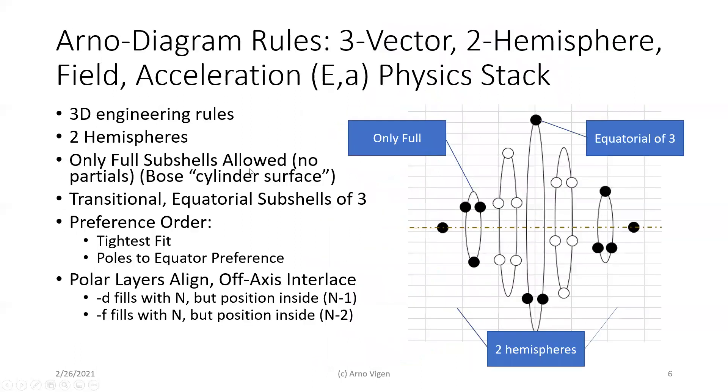Now, now let's build the Arno diagram of how that looks. And there are specific rules then that apply in this three vector electrostatic strong weak two hemisphere field acceleration physics stack. First, there's two hemispheres. As I said, they try and build opposite each other. Now, notice that this one are offset by half phase. So that this electron through the nucleus at 180 degrees always has a poly hemisphere pair.